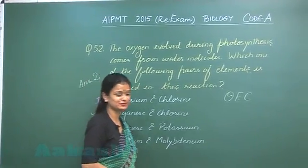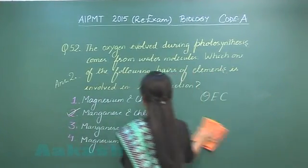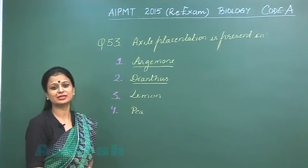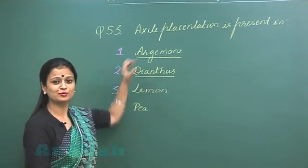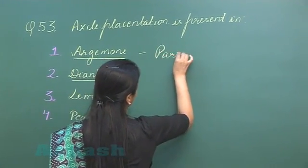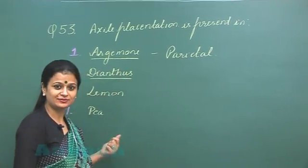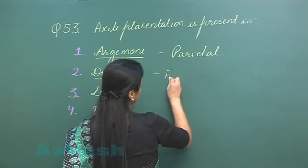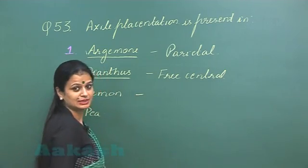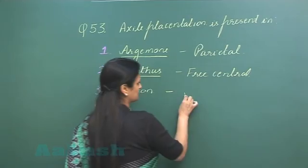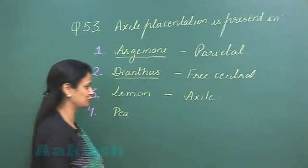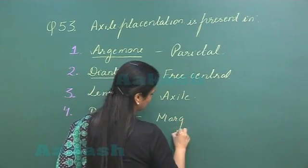Now let's discuss question number 53, which asks in which of the following there is presence of axile placentation. In Argemone there is parietal placentation; in Dianthus, free central placentation. Lemon belongs to the Rutaceae family and has axile placentation. In Pea, which belongs to the Fabaceae family, there is marginal placentation.